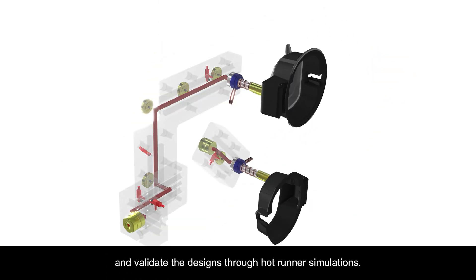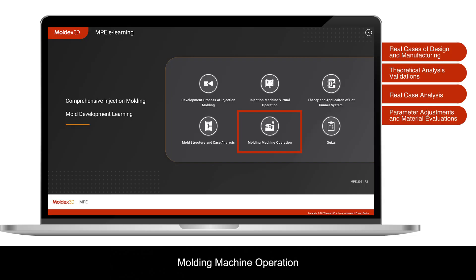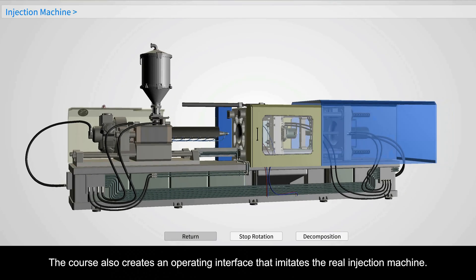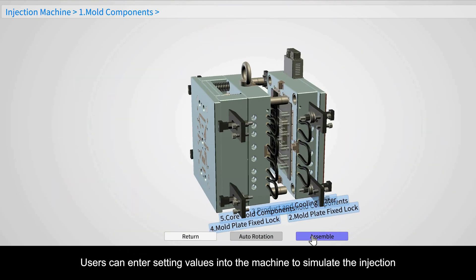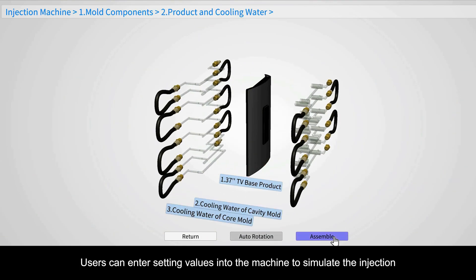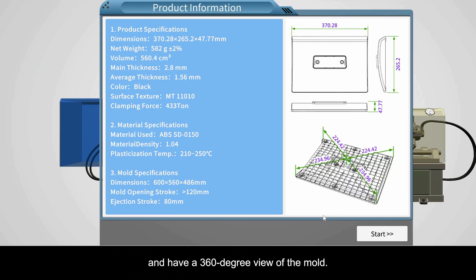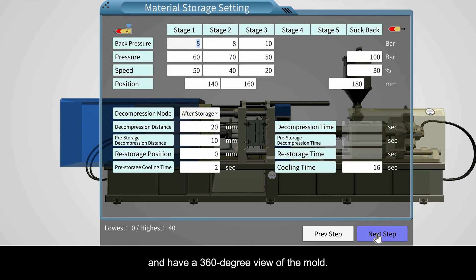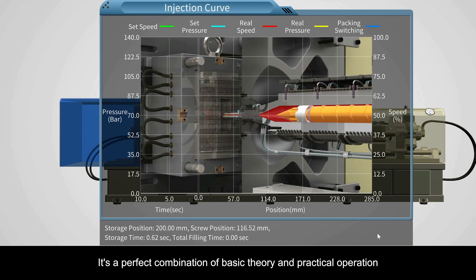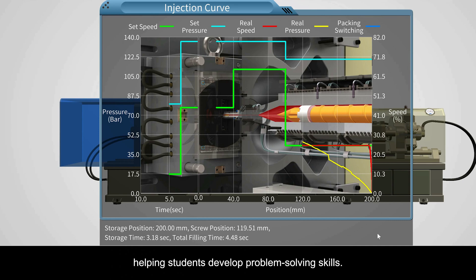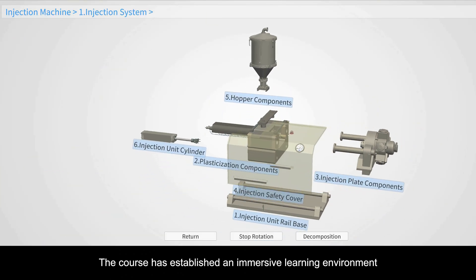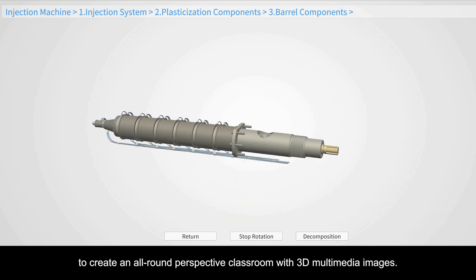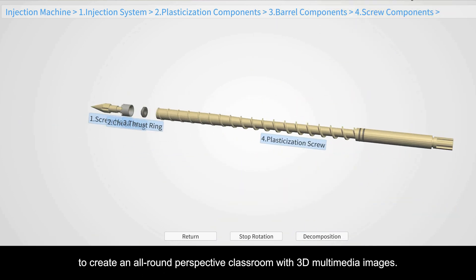The molding machine operation course creates an operating interface that imitates a real injection machine. Users can enter setting values into the machine to simulate injection and have a 360-degree view of the mold. It's a perfect combination of basic theory and practical operation, helping students develop problem-solving skills in an immersive learning environment with an all-round perspective classroom using 3D multimedia images.